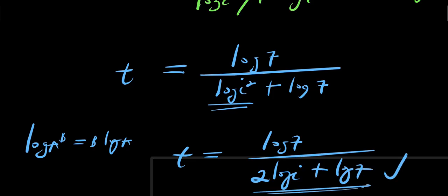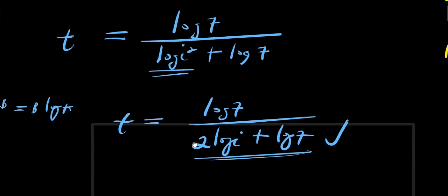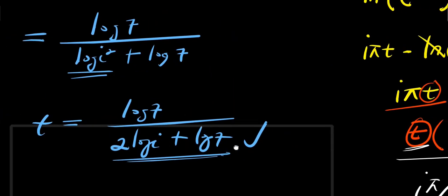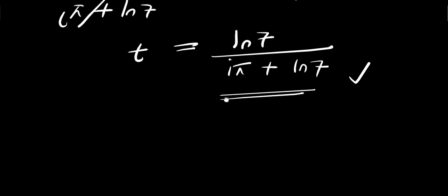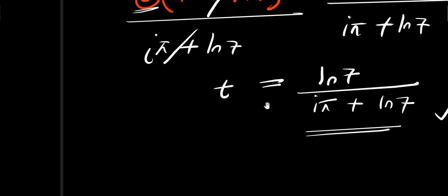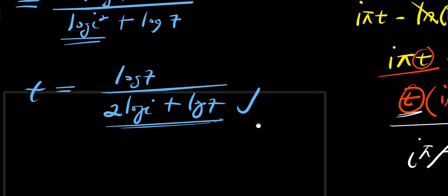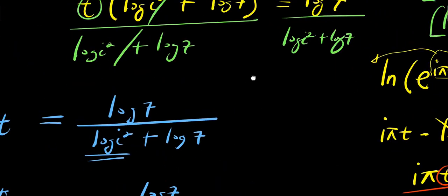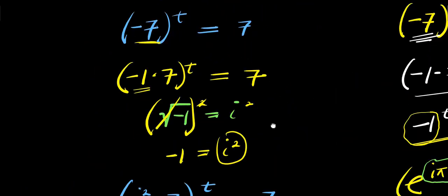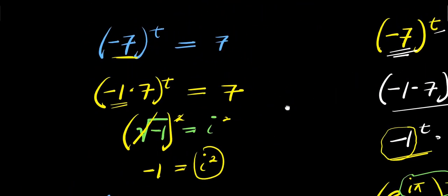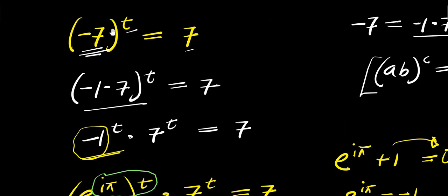So we have this solution again. These are our two solutions — one making use of logarithm and natural log, the other making use of the complex identity. The two solutions are obviously both correct depending on the method that you want to use. Ladies and gentlemen, that is it — thank you and goodbye.